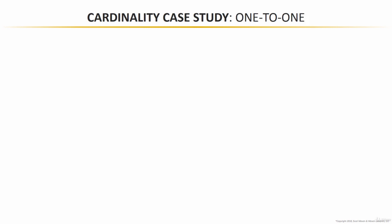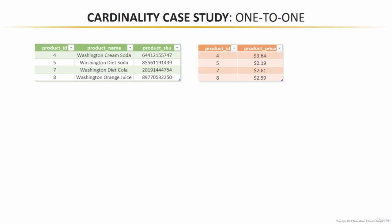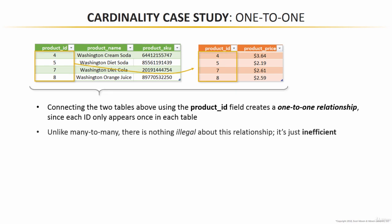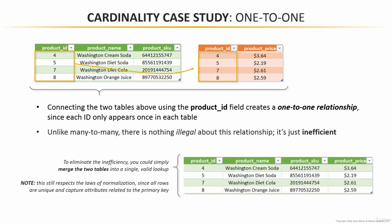Now let's move on to our second cardinality case study: one-to-one. Compared to many-to-many, this one's not nearly as bad. In fact, you can create one-to-one relationships — they're just a little bit inefficient. Consider these two tables: a product lookup on the left, just like before but without those duplicate ID number four rows, and almost like a smaller product lookup in orange on the right with product IDs and product prices. If we were to connect these two based on product ID, we're creating a one-to-one relationship since each ID only appears once in each table. Unlike many-to-many, there's nothing illegal about this relationship — it's just kind of an inefficient way to do things. To eliminate the inefficiency, you could simply merge those two tables together into a single valid lookup.